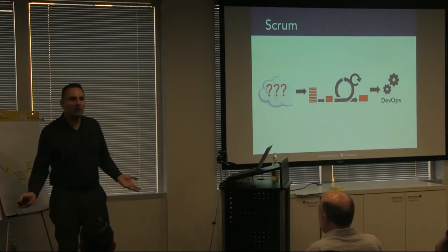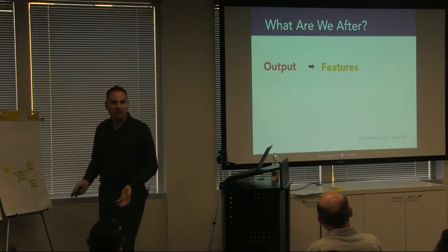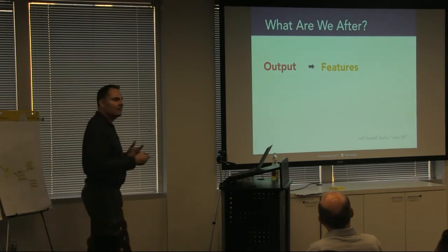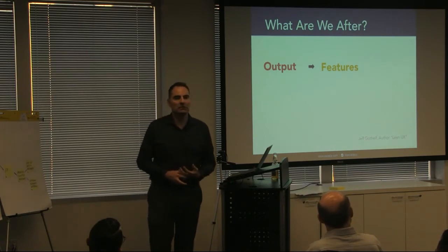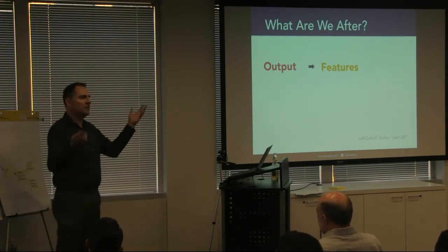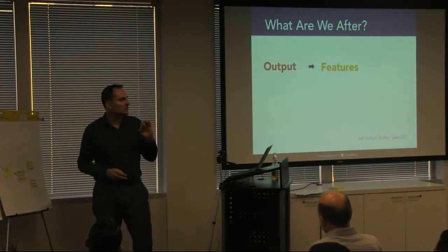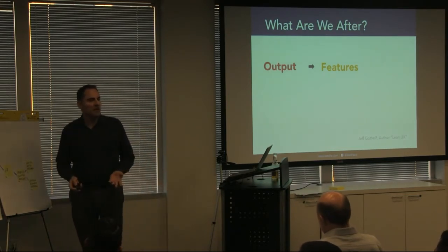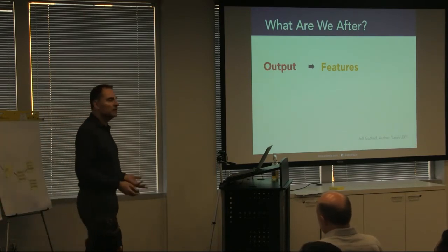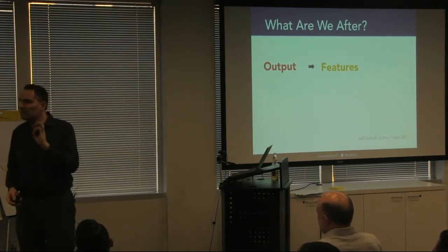As Agilists, we care about creating working software — that's our measure of progress. We produce output. But what is the value of a specific feature? We always throw around the number that 60% of all features are rarely, if ever, used. Maybe the value of unused features isn't just zero — by adding more features you create feature bloat, design bloat, usability problems, and maintainability problems. Maybe the value of features that don't get used is actually negative.